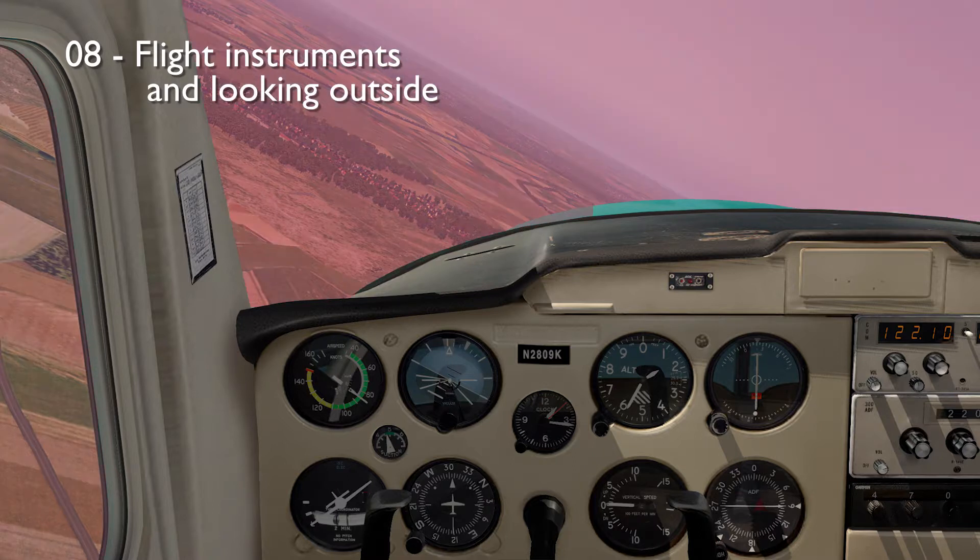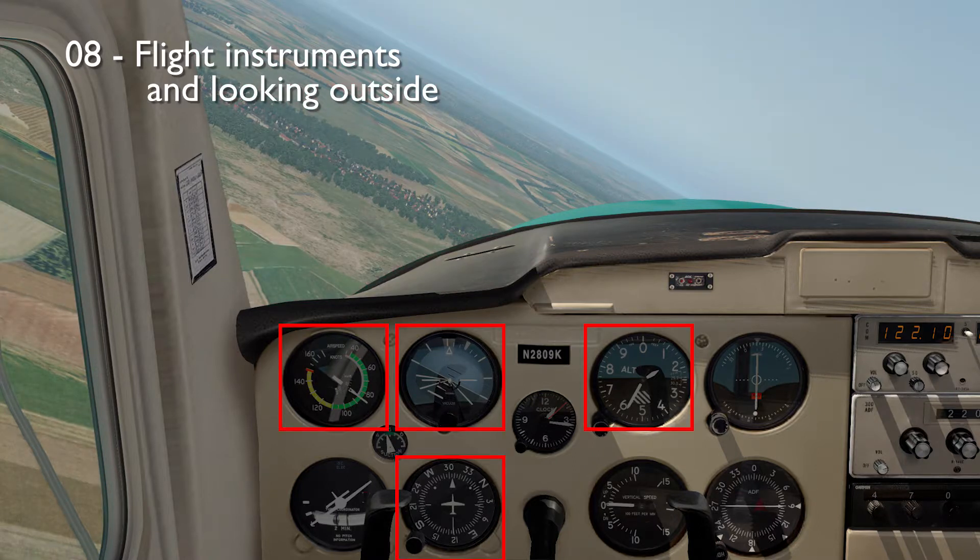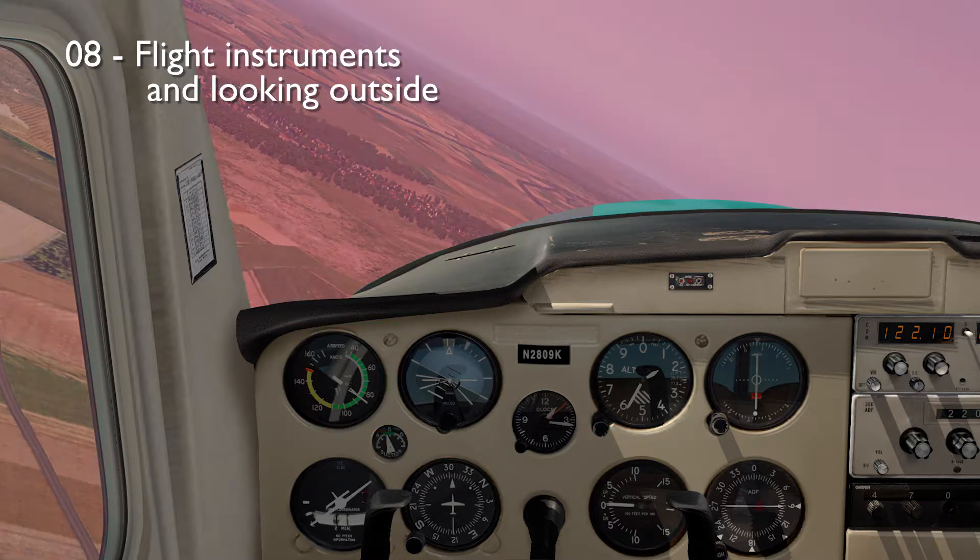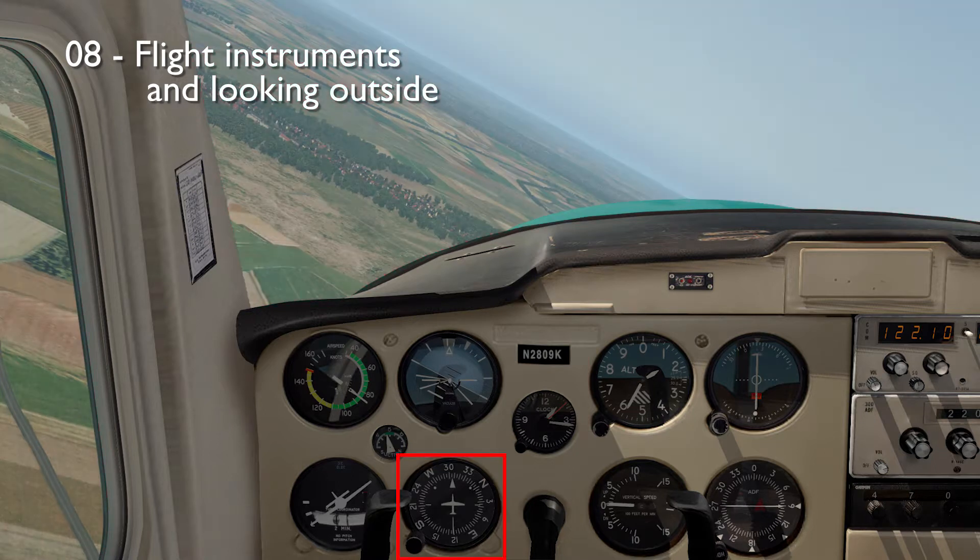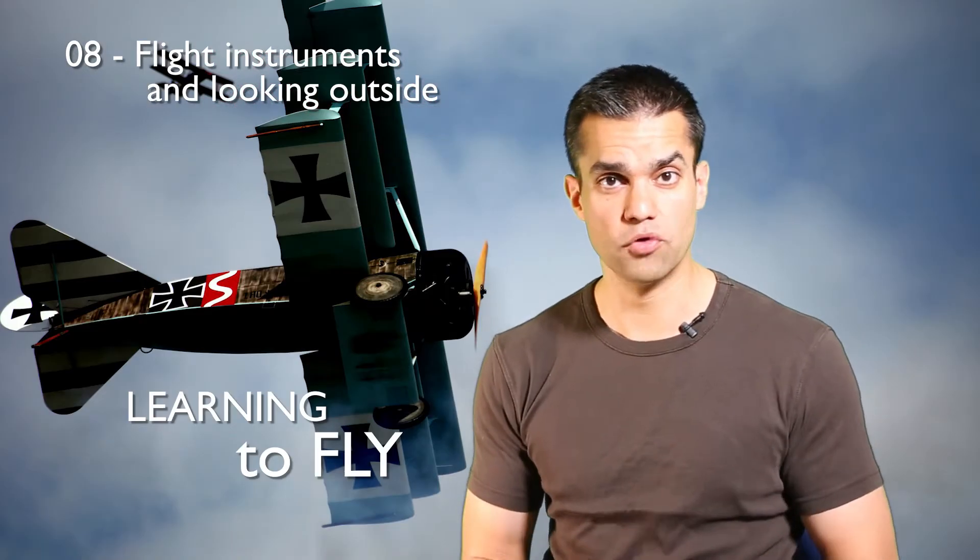What I learned to do was look outside and then look at each one of the instruments in the central T in turn, looking outside and then at the next instrument until I'd gone through the cycle and was maintaining a good look outside, and repeat the cycle while performing the maneuver.